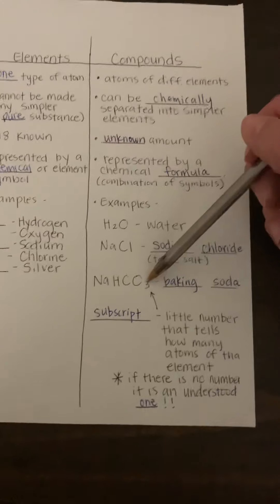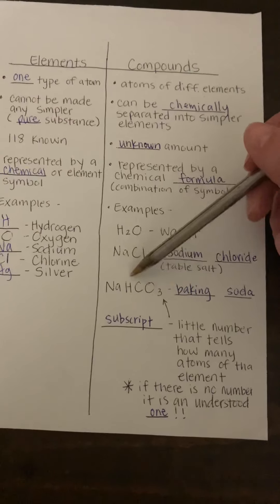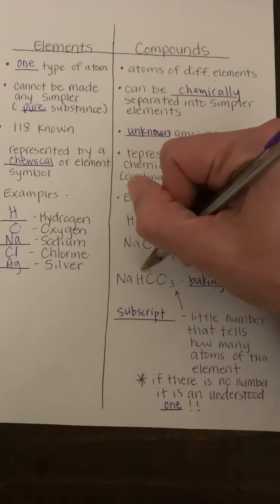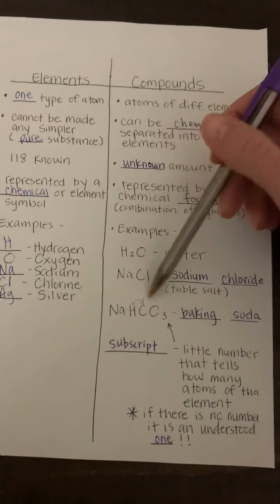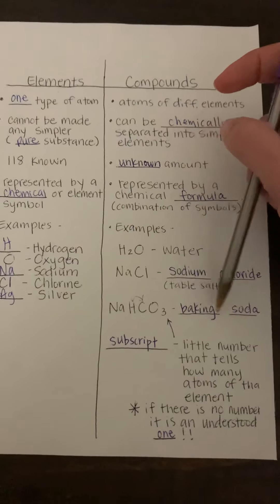All right, in this one, I like to call it 'nacho three,' because if you mix this up, it would spell nacho. So NaHCO3, that is going to be baking soda.